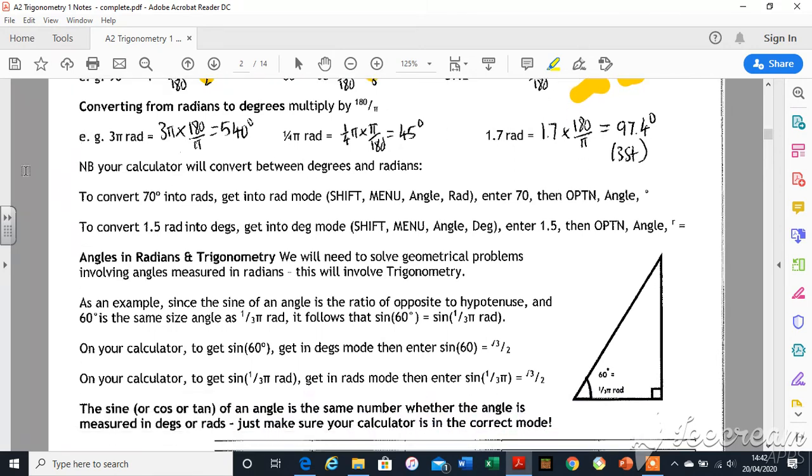Going back then, radians to degrees. If I'm going back, I just do the opposite. I times by 180 and divide by π. So 3π, if I times by 180 and divide by π, gives me 540 degrees.